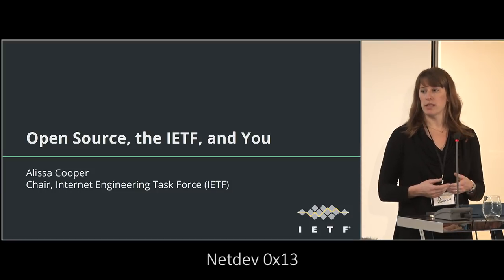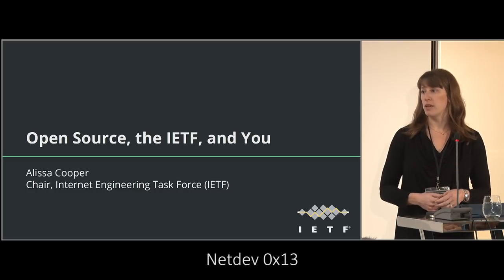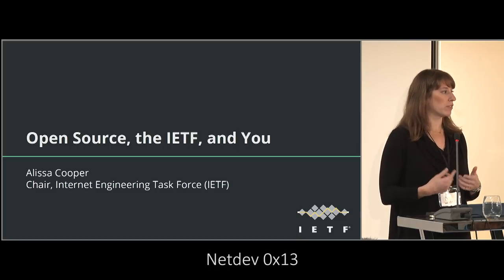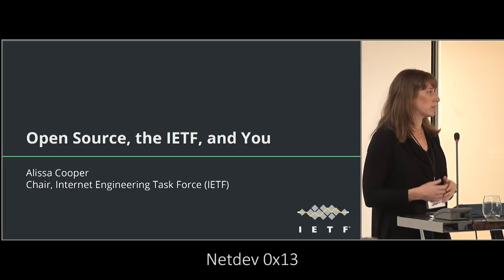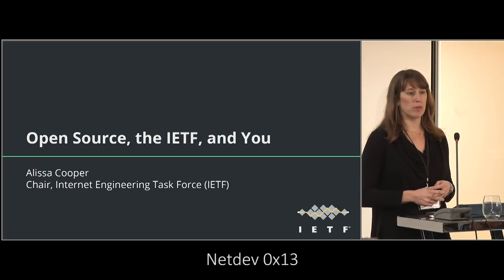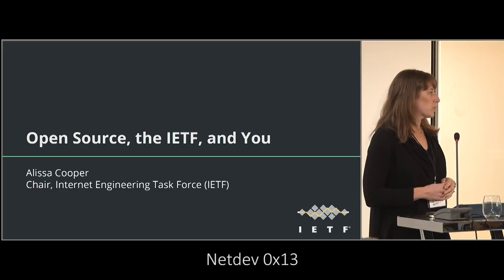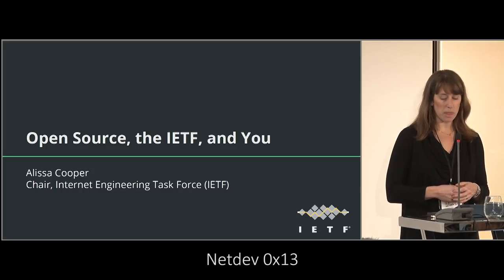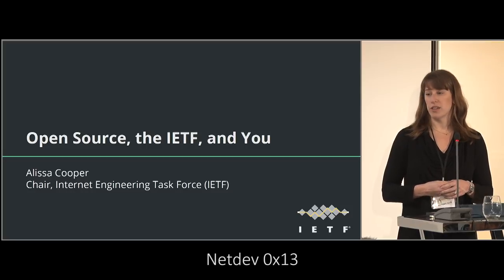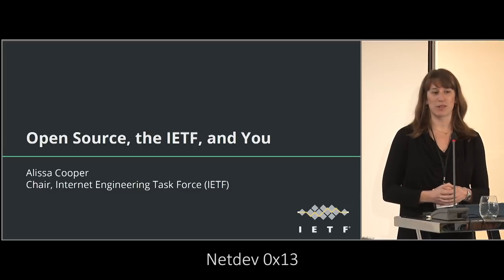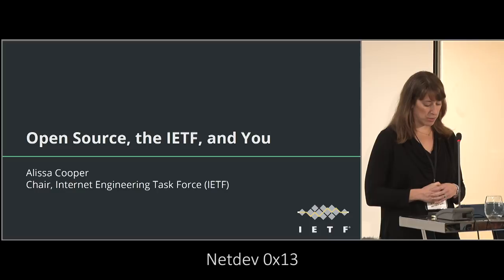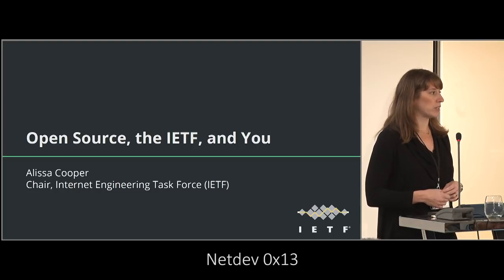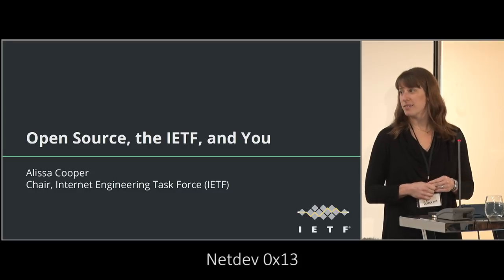Today I'm going to walk through two different examples of that last model — the parallel development of standards and implementations — because it's an interesting moment in the evolution of how we work within the IETF, showing the value of implementations and cross-pollination. The first example is TLS 1.3, which was finalized last year, and the second is QUIC, which is currently still under development. I'll also use these to talk about protocol ossification, and at the end, explain how you can get more involved in the IETF.